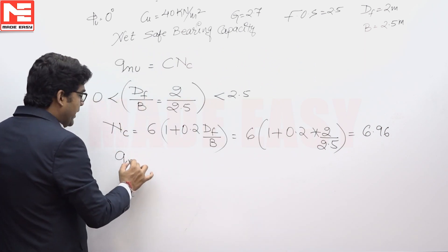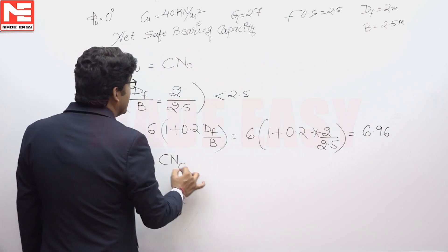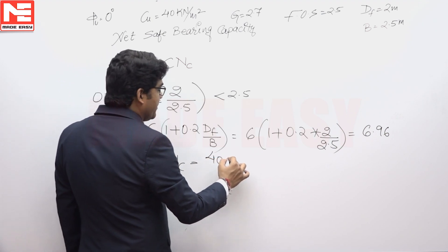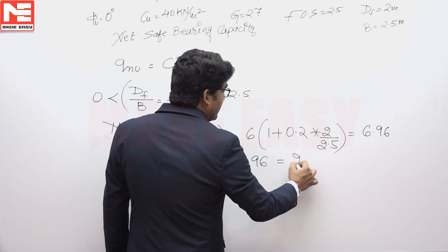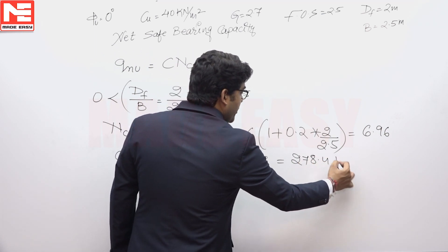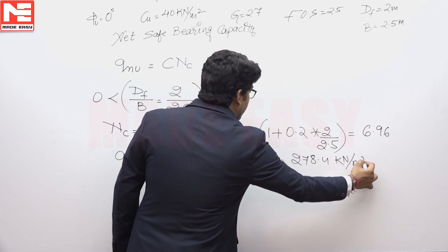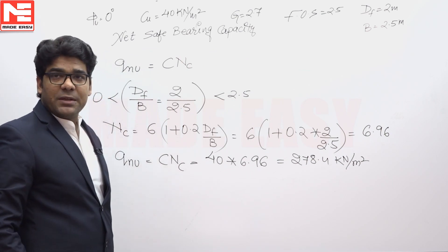We can easily calculate QNU, which will be equivalent to C times NC. C is given as 40 kilonewtons per meter square, and NC is 6.96, so this value will be 278.4 kilonewtons per meter square. This is the net ultimate bearing capacity.